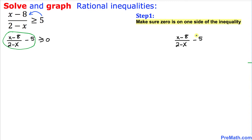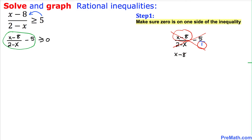The 5 can be written as 5 over 1 to make it a fraction. Now we have a difference of two fractions. We are going to do cross multiplication. When we cross multiply, 1 times (x minus 8) is going to give us x minus 8, and when we multiply the other way around...